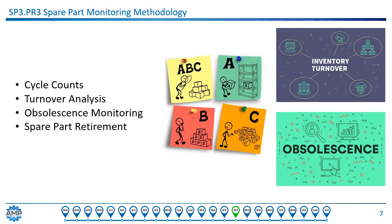Our third process is Spare Part Monitoring. Spare Part Monitoring is basically about continuous improvement of the Spare Parts Management System and how it's administered. There are certain elements of monitoring that should be supported by process and documented, such as cycle count. Cycle counting involves counting a small amount of inventory in the warehouse each day, with the intent of counting the entire inventory over a period of time. Any errors found during these small incremental counts should result in adjustment to the inventory accounting records.